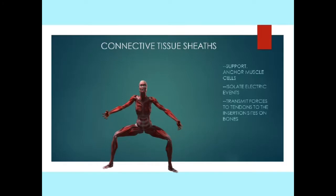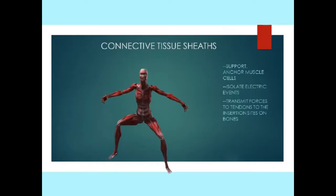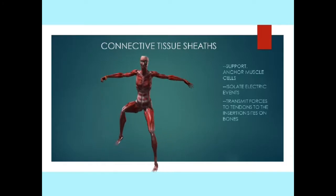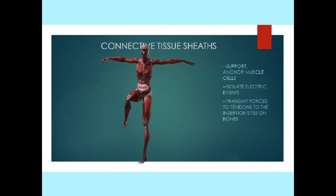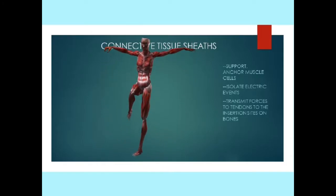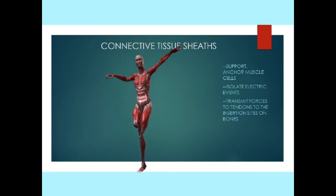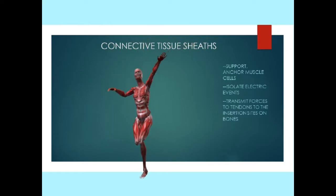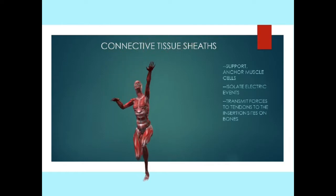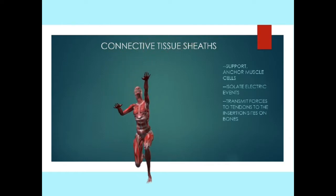Skeletal muscle includes connective tissue wrappings of muscle cells, groups of muscle cells, and the entire muscle. These wrappings help to isolate the electrical events occurring within muscle cells.